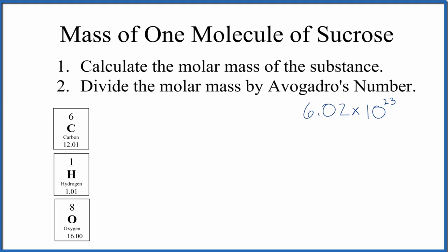So sucrose has a chemical formula of C12H22O11. So for the molar mass, we have carbon, which on the periodic table is 12.01 grams per mole, and we have 12 carbon atoms.